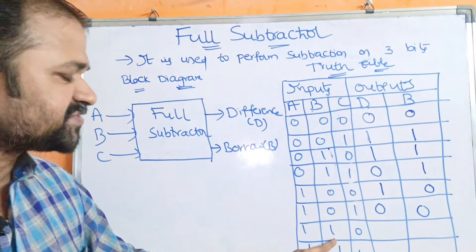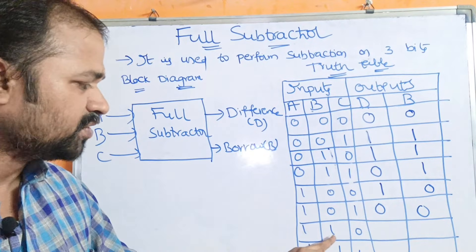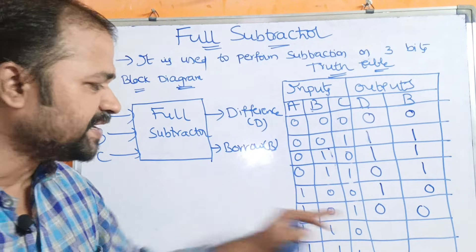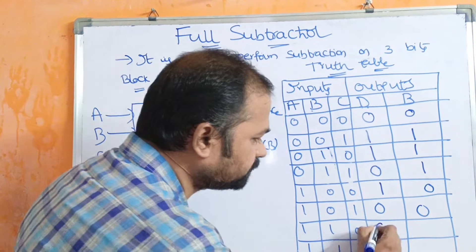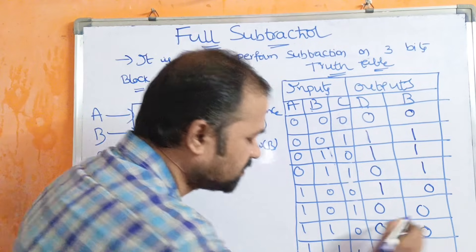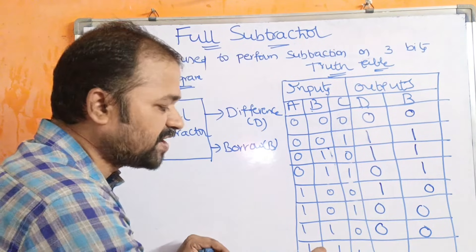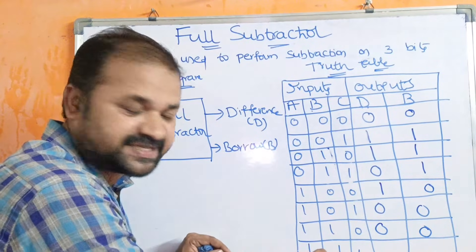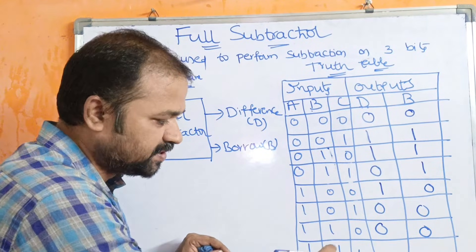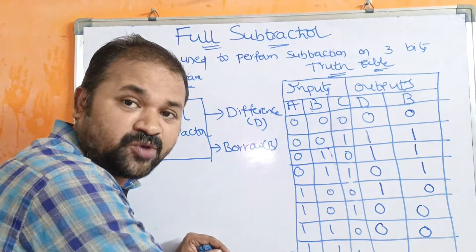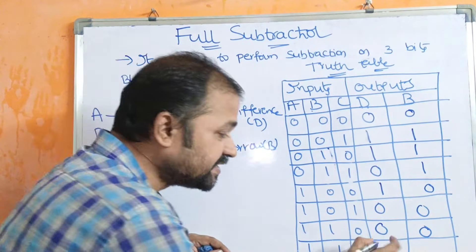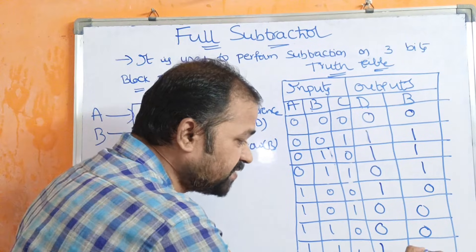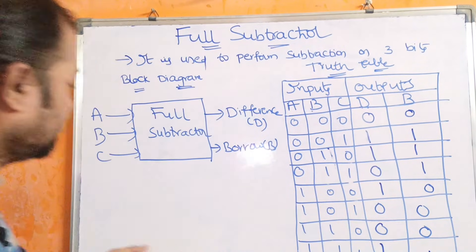For (1,1,0): 1 minus 1 is 0, then 0 minus 0 is 0, so difference is 0, borrow is 0. For (1,1,1): 1 minus 1 is 0, then 0 minus 1 gives difference 1, borrow 1.